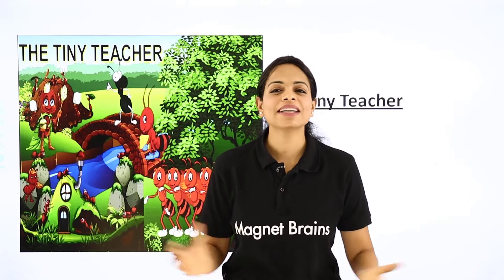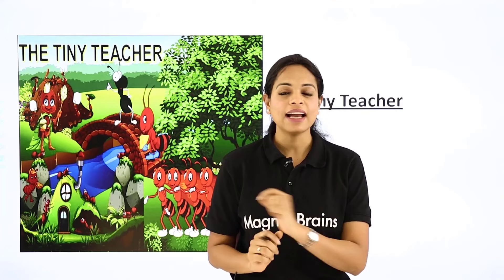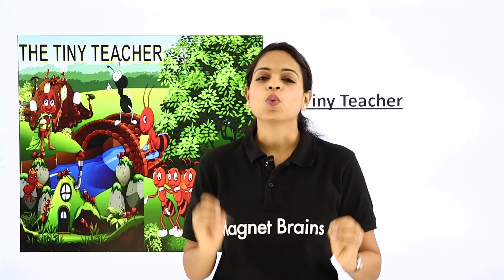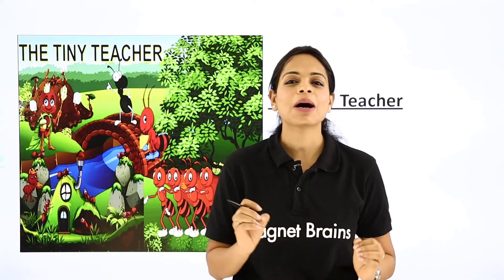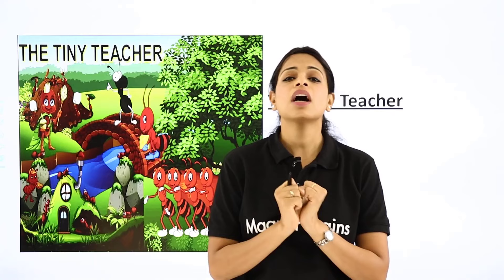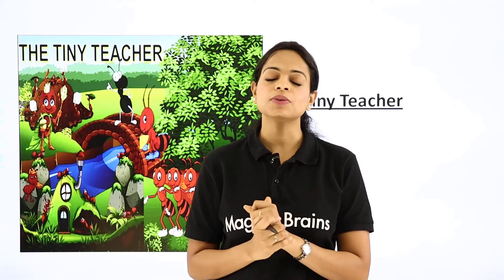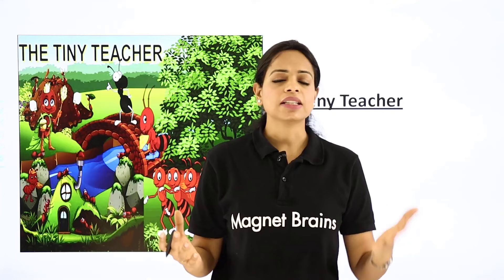Hello everyone, my name is Swati, your English educator from Magnet Brains. Welcome! Today we are going to start the supplementary reader 'An Alien Hand' of the seventh standard NCERT syllabus. We are done with the Honeycomb book — we have dealt with all the chapters and all the poems. Now we are about to commence with this new book 'An Alien Hand,' which has 10 chapters, no poems.